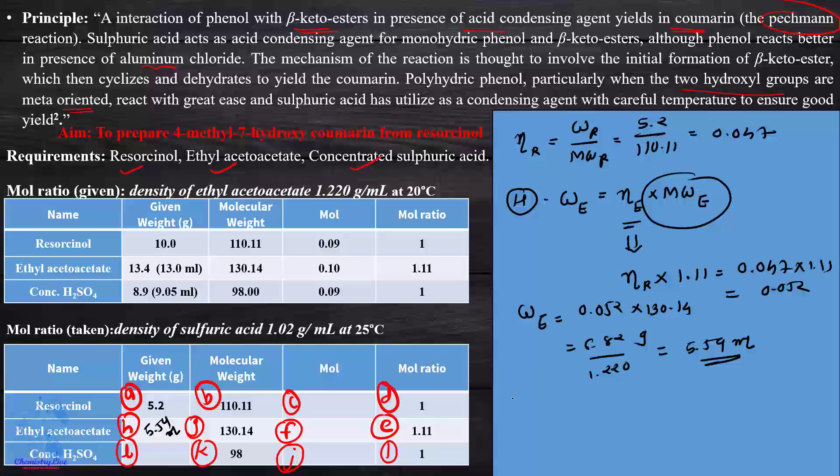Same manner for sulfuric acid: moles of sulfuric acid multiplied by molecular weight. So 0.047 multiplied by 1 gives 0.047, and the molecular weight is 98. We get 4.62 gram divided by density 1.02, so we get 4.53 ml required.